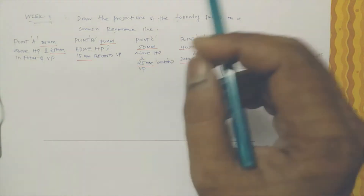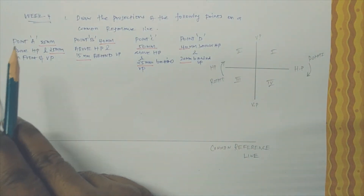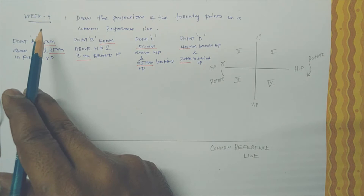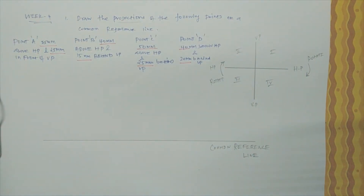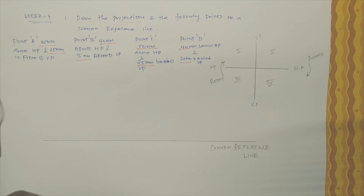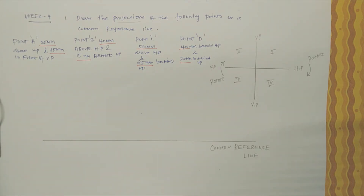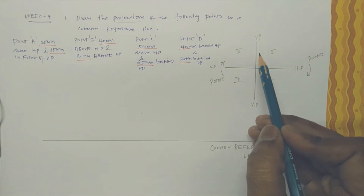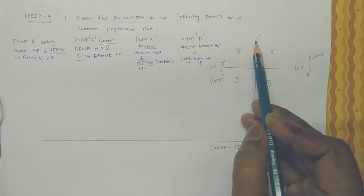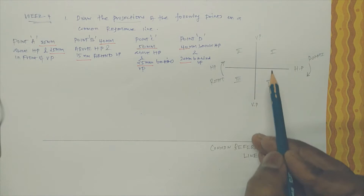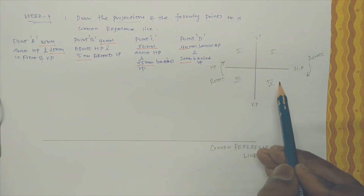Welcome students. Today we are discussing week number four, and the new topic is projection. The concept of projection is nothing but the object we are projecting to a straight line in the vertical and horizontal plane. For example, I have drawn one quadrant here — this one is HP and this one is VP. First, second, third, fourth quadrant.